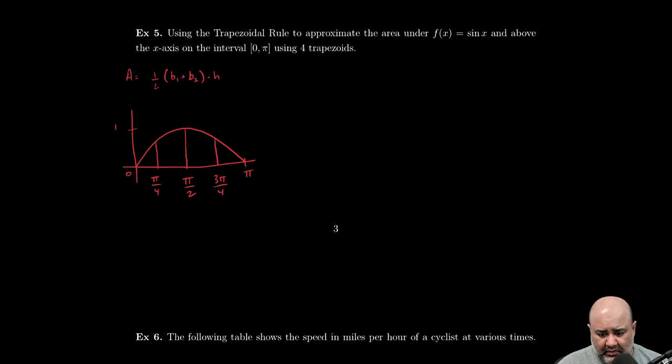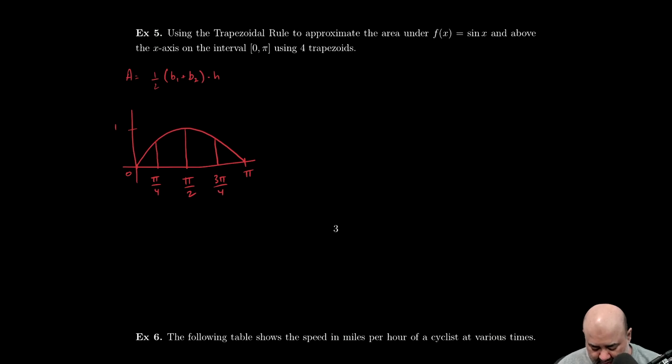So now we're looking at what the area is going to be for each of these trapezoids. Base one here would just be zero, and base two here would be the height of this function at that point. So if I were to draw my trapezoids, this would be one, this would be another, this would be a third, and then this would really just be a triangle.